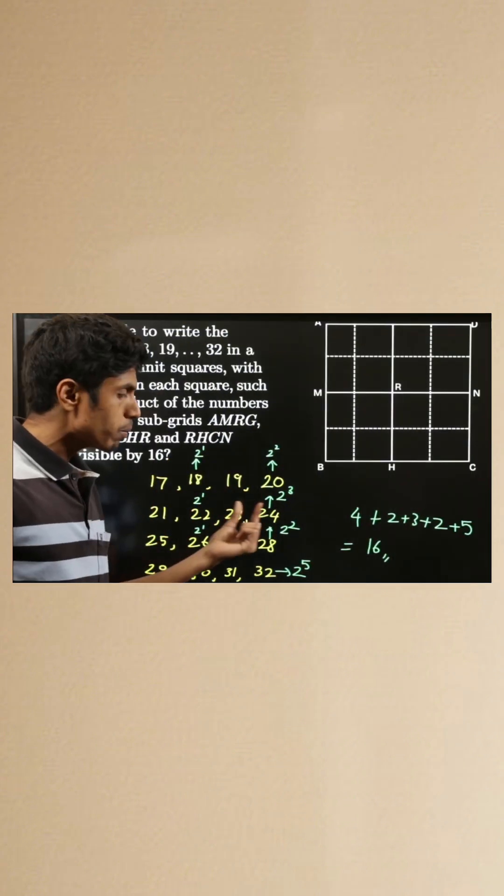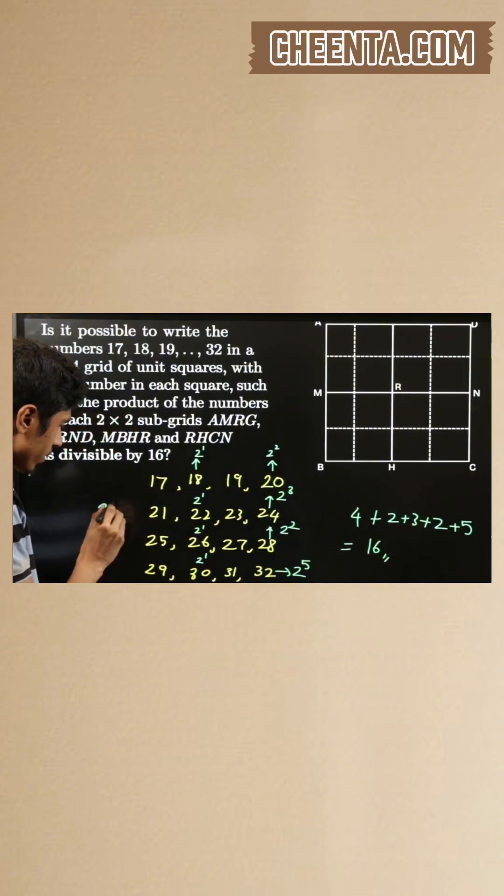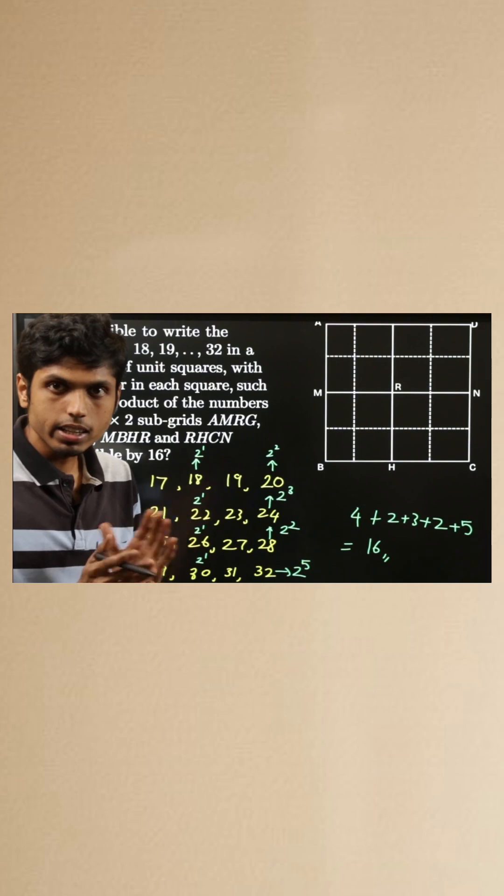So if you multiply all the numbers, you are going to get 2 power 16 in that product.